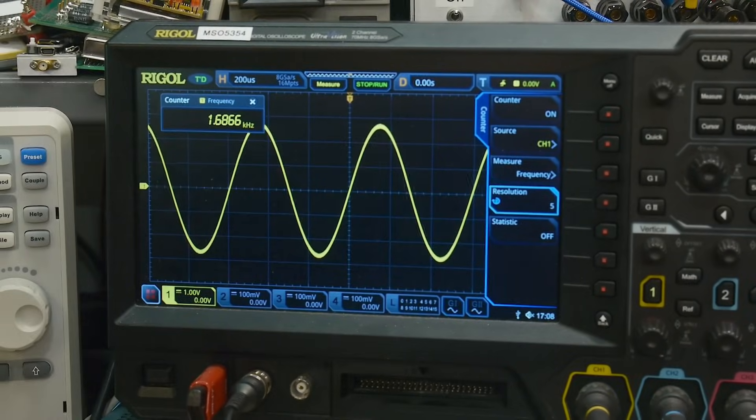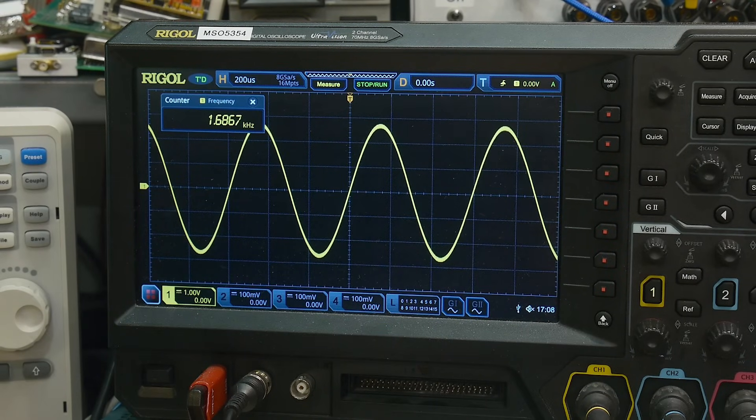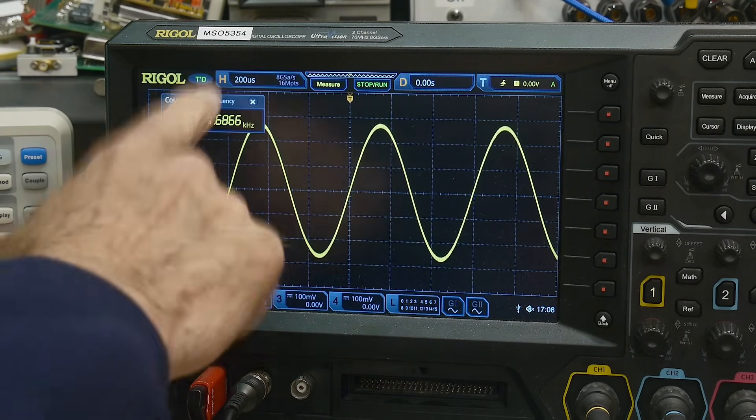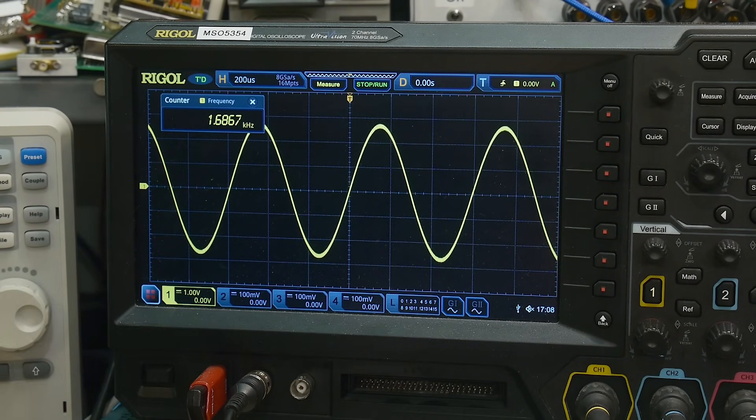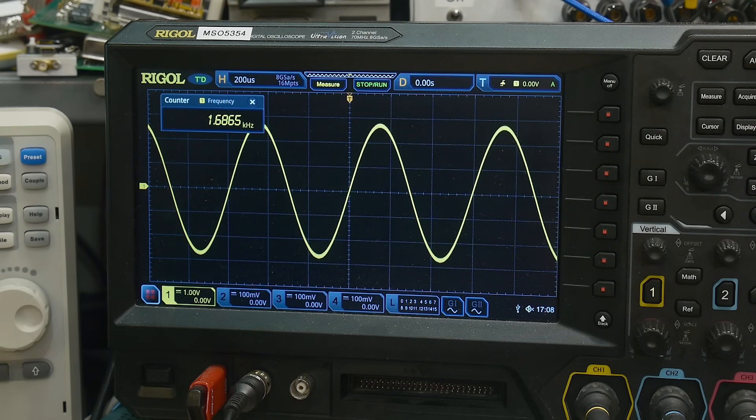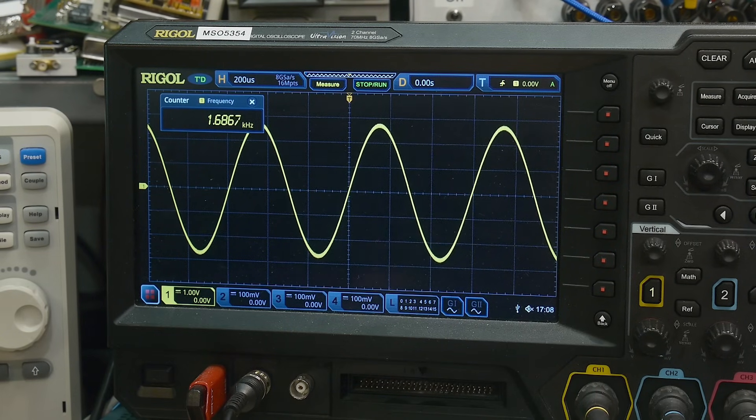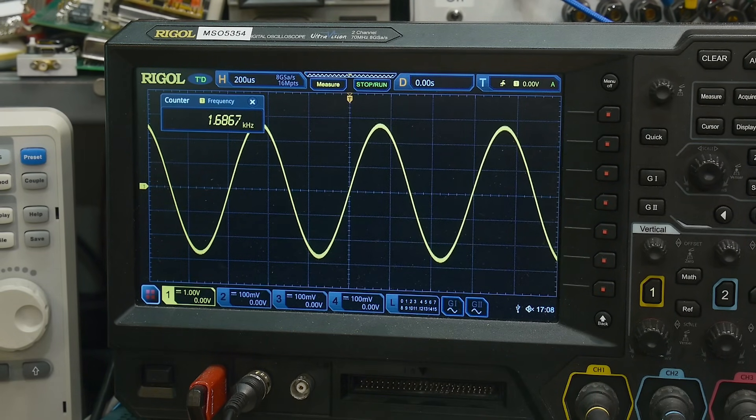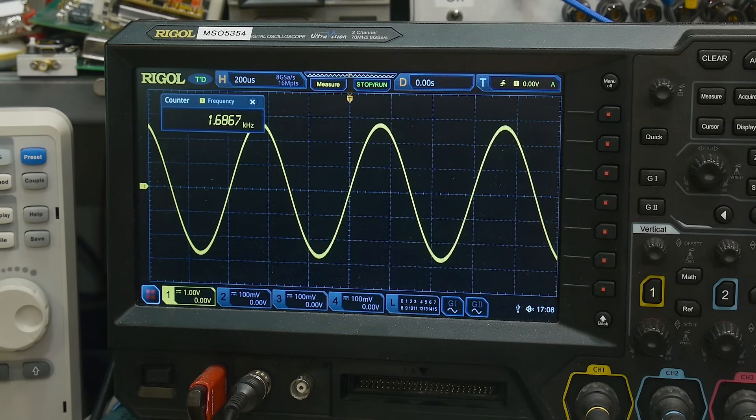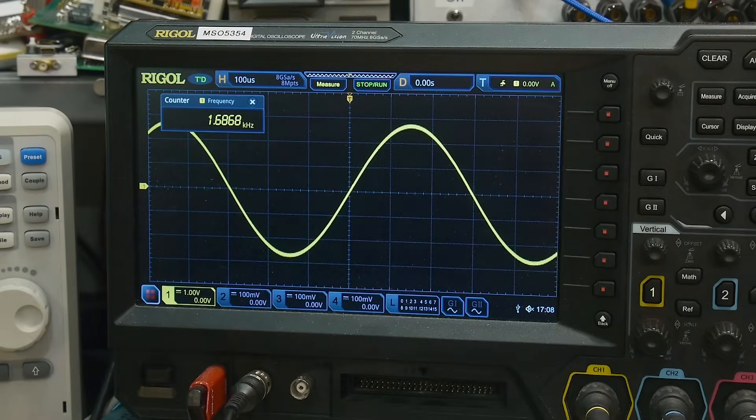All right, so let's see what we got. Look at that, it oscillates. And it's a very nice sine wave too. Very nice sine wave. And what is it oscillating at? 1.68 kilohertz. What do we expect? 1.6. 1.6, 1.68. Pretty good. Remember, these are 5% resistors and 20% capacitors. And yeah, looks pretty good. I'm actually impressed with the shape of the sine wave there. It looks very, very nice.